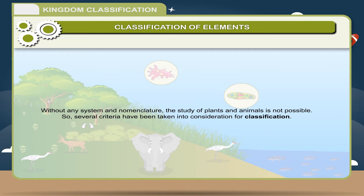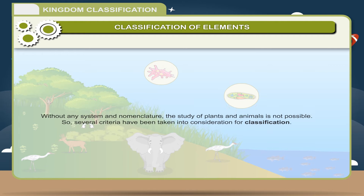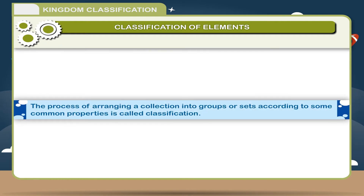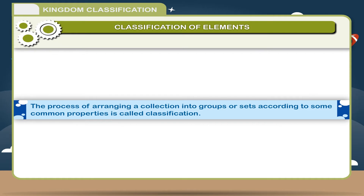So, several criteria have been taken into consideration for classification. The process of arranging a collection into groups or sets according to some common properties is called classification.